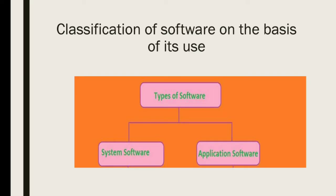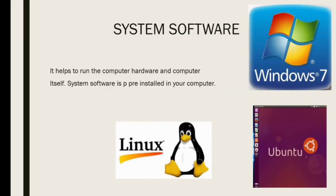System Software helps to run the computer hardware and the computer system itself. System Software is always pre-installed on your computer. Windows and Linux are examples of System Software.